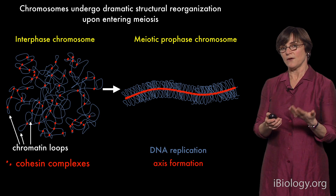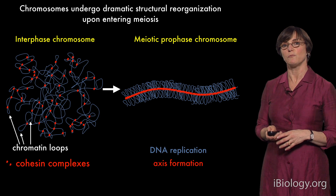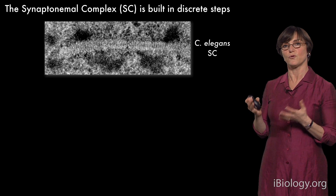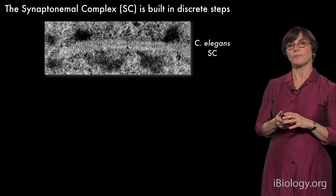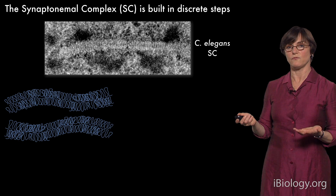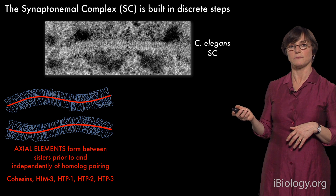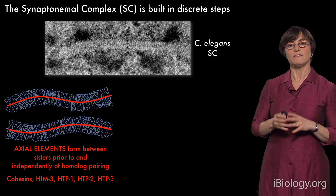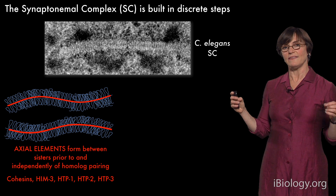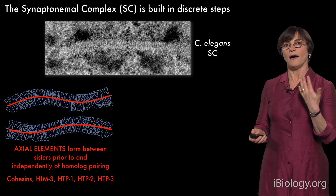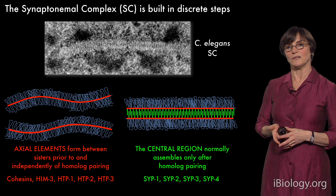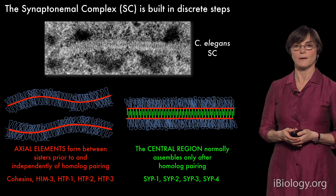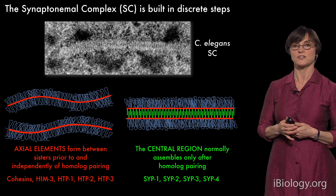We know that pairing and synapsis has multiple steps. The formation of the synaptonemal complex is a stepwise process that begins with formation of the axes, which happens even before chromosomes pair. Only after they pair is the formation of this complete complex triggered. We draw it as if it's a zipper zippering up the chromosomes, and we have some evidence that it actually behaves that way.